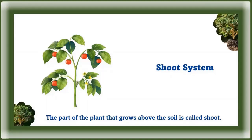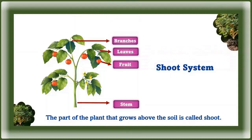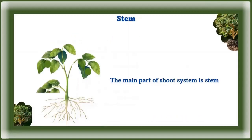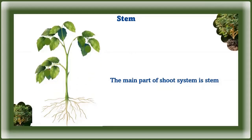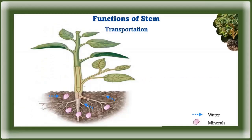Now we're going to look at the shoot system. The part of the plant that grows above the soil is called the shoot. It has stem, branches, leaves, fruit, bud, and flowers. The main part of the shoot is the stem.